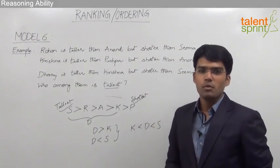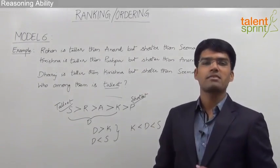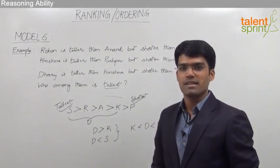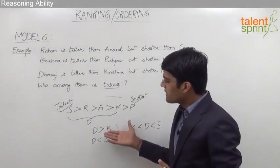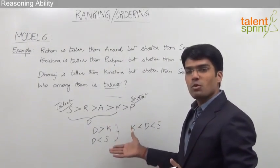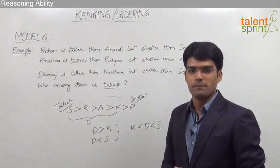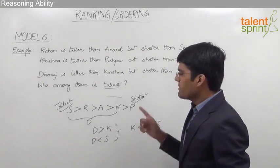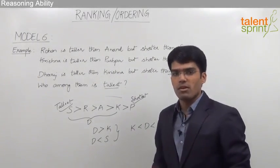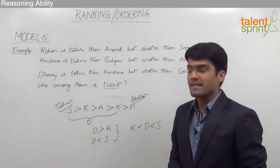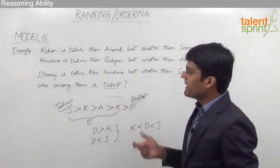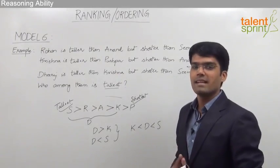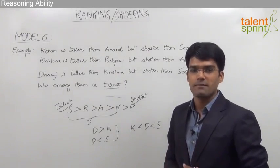However, as a Banker's Choice student, we cannot afford to spend so much time on such a simple problem. If you try to be smart, the same question can be solved within 5 to 10 seconds simply by finding out the wrong answers. Let's understand how to solve this in a smarter way.